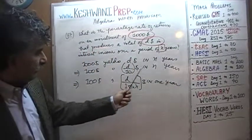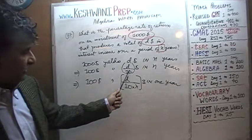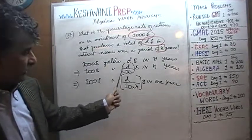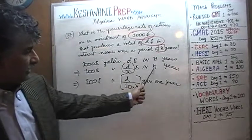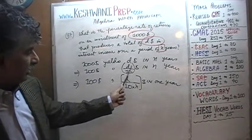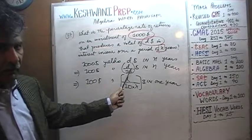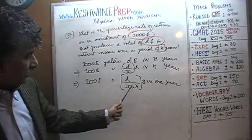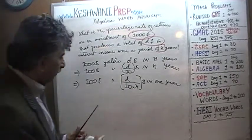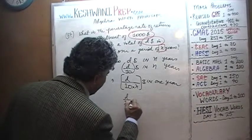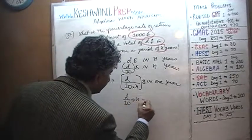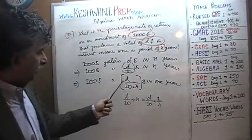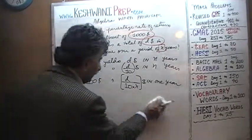We divide this quantity by N. If we earn this much income in 2 years, in 1 year we earn half — dividing by 2. If in 3 years, we divide by 3. So here, D over 10 divided by N is the same as D over 10 times 1 over N, which translates into D over 10N.